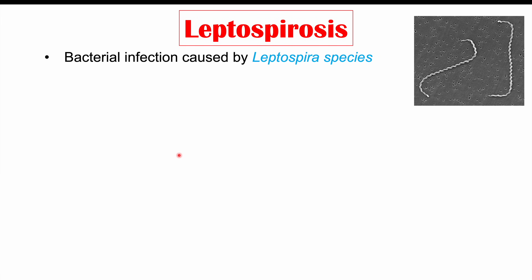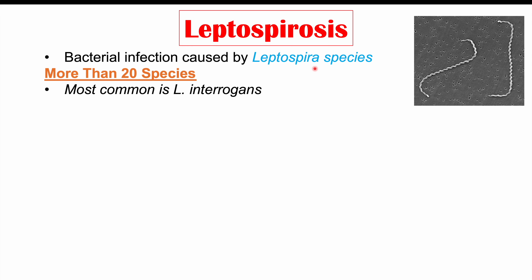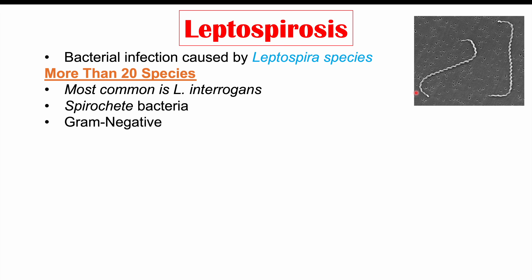Leptospirosis is a bacterial infection caused by Leptospira species. There have been more than 20 species of this particular bacteria identified, but the most common cause of leptospirosis is Leptospira interrogans. These bacteria are spirochetes — twirly bacteria that are gram-negative and obligate aerobes, meaning they require oxygen to live and grow.